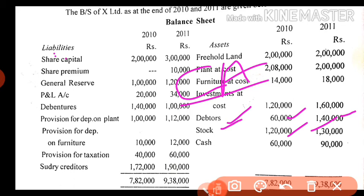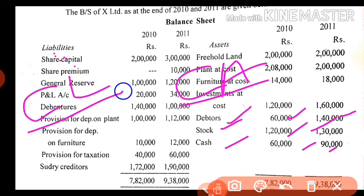Cash: 60,000 to 90,000 — an increase of 30,000 shown in the increase column. Then total the current assets for the first two columns. Under the heading 'current liabilities', provision for taxation: 40,000 to 60,000.